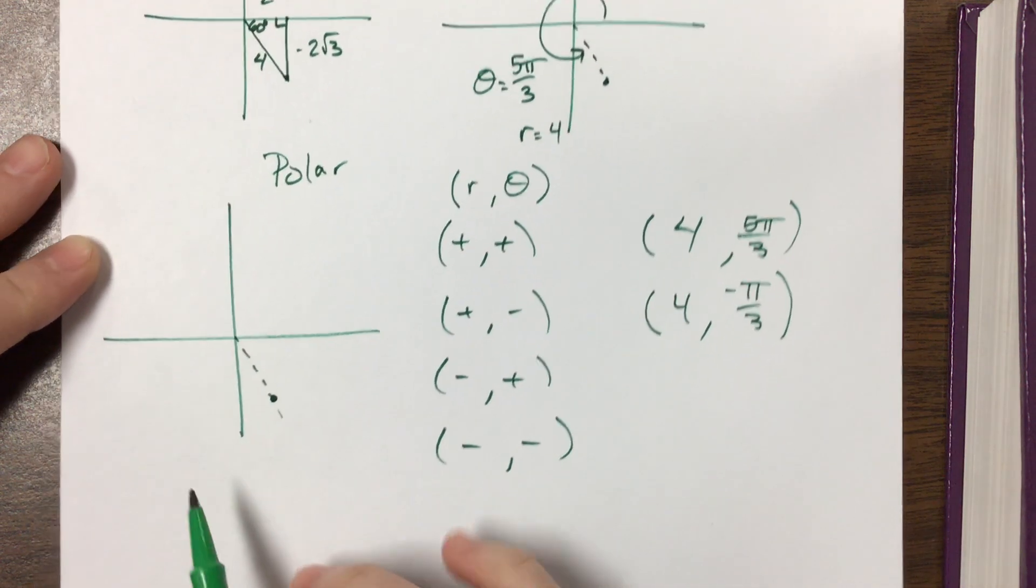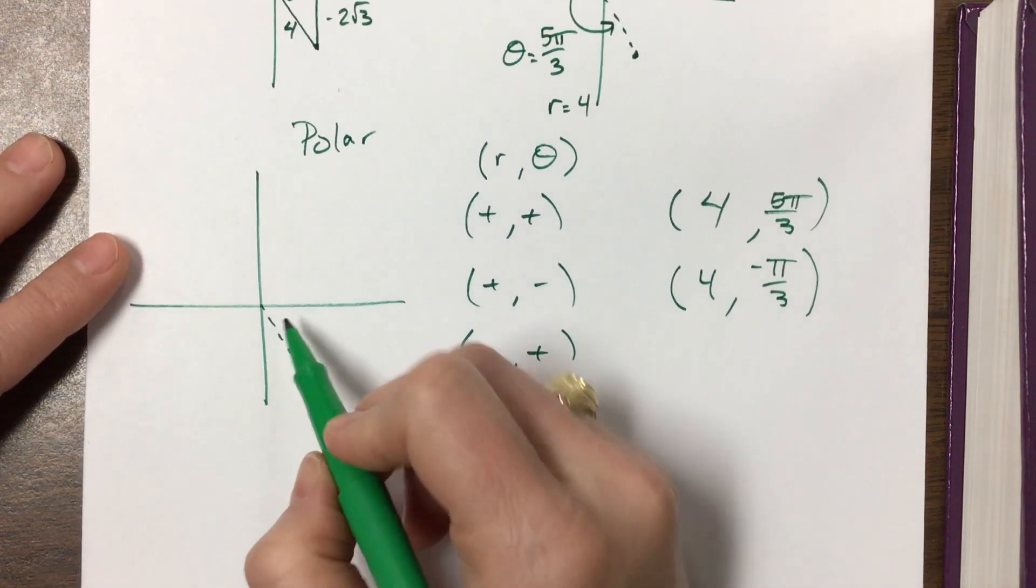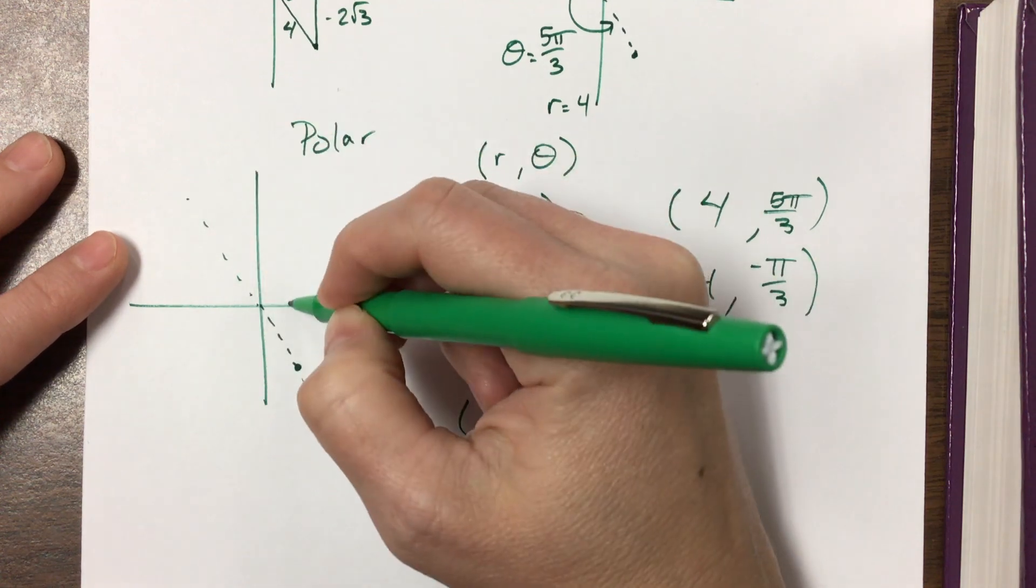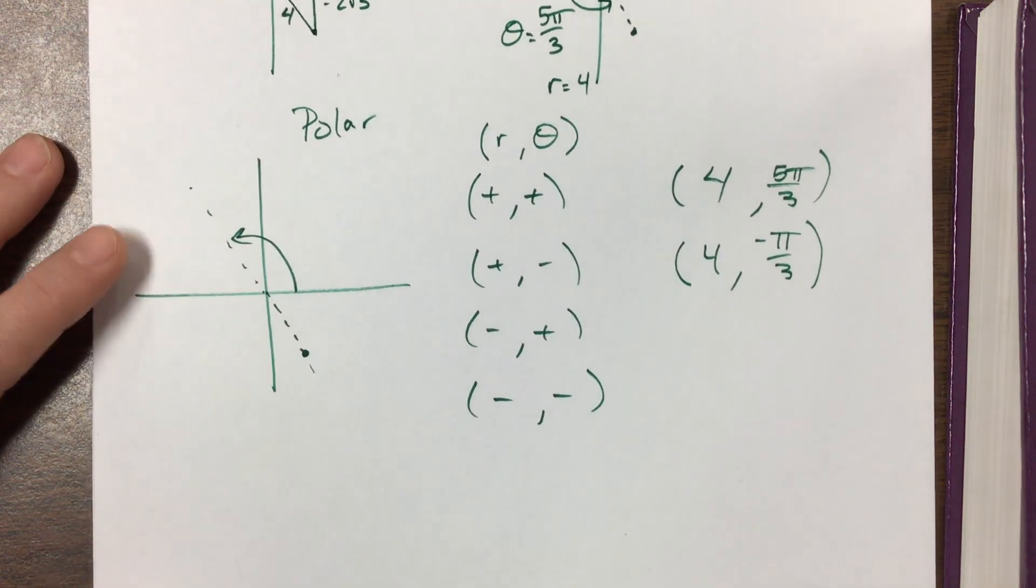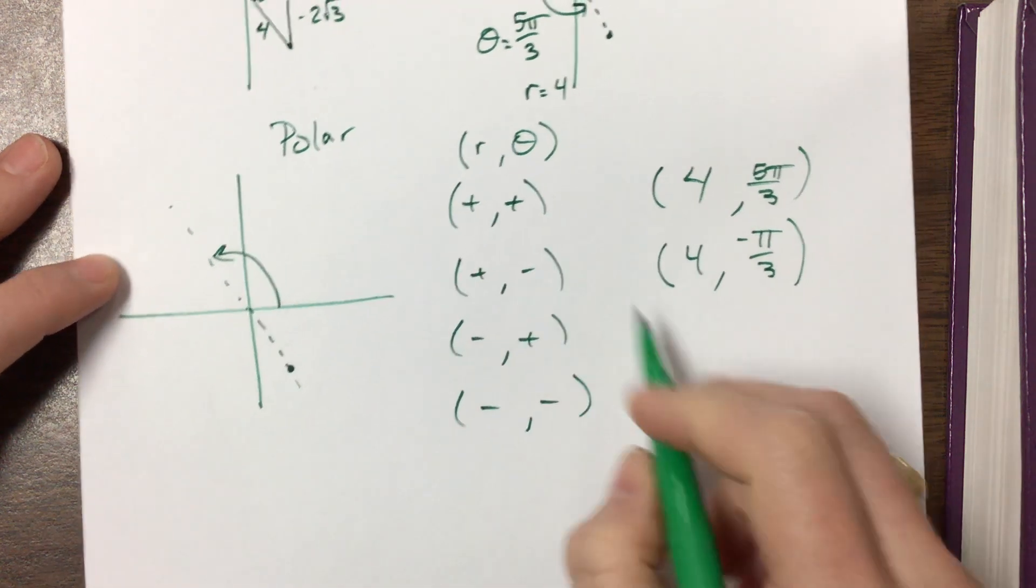The next one I wanted a negative radius but a positive angle. So that means I have to think of what this would be to get me here, and then I'm going to turn around and go in the negative direction. Well going in the positive, that's a positive 2 pi over 3, and then I turn around and go negative 4.